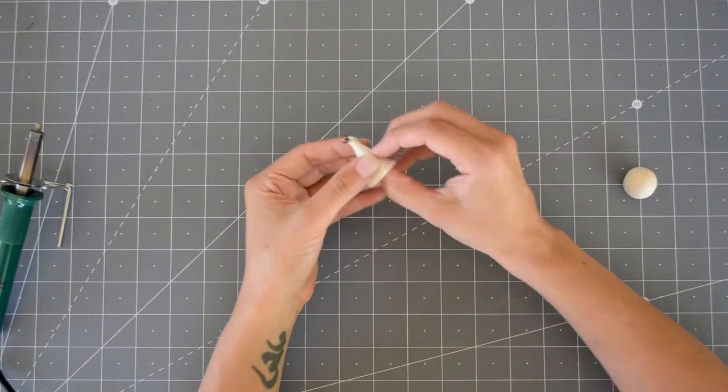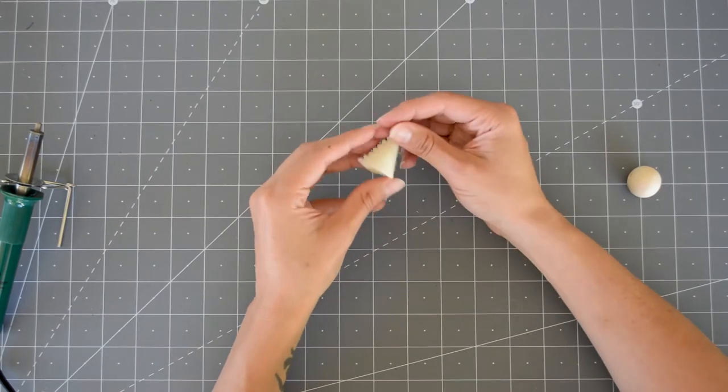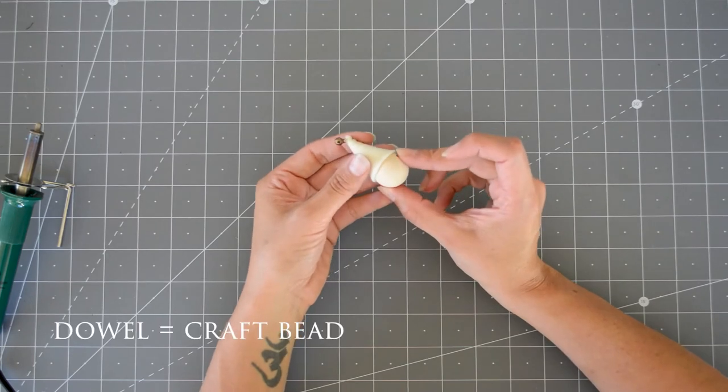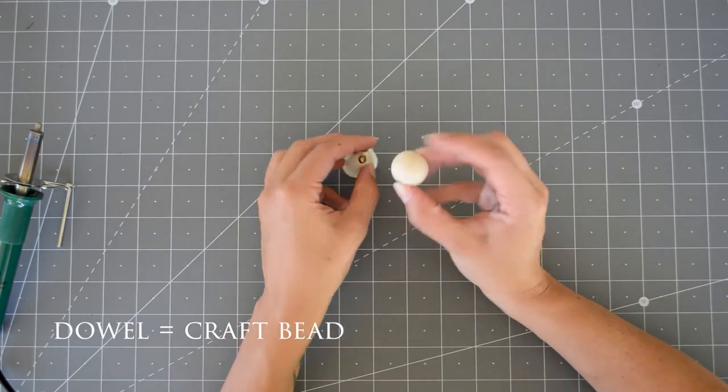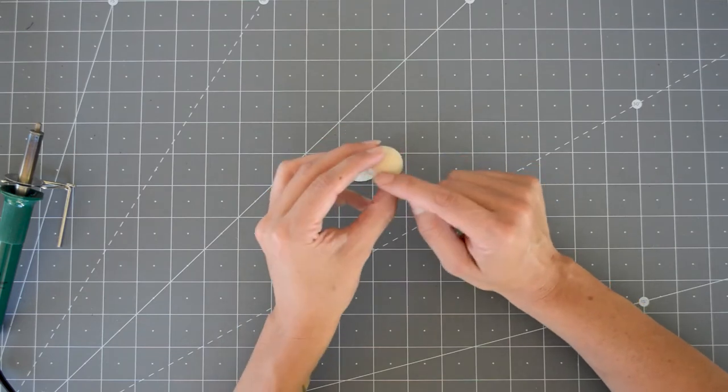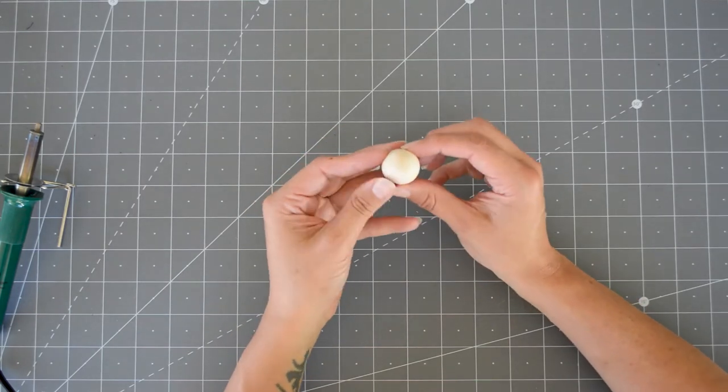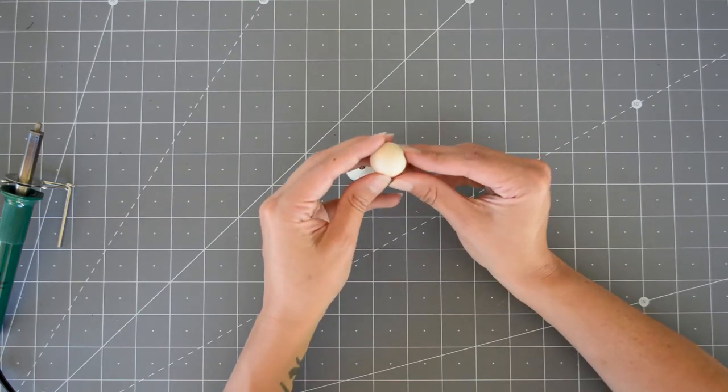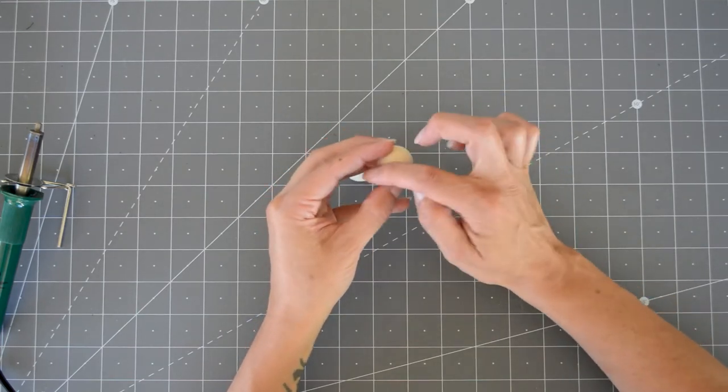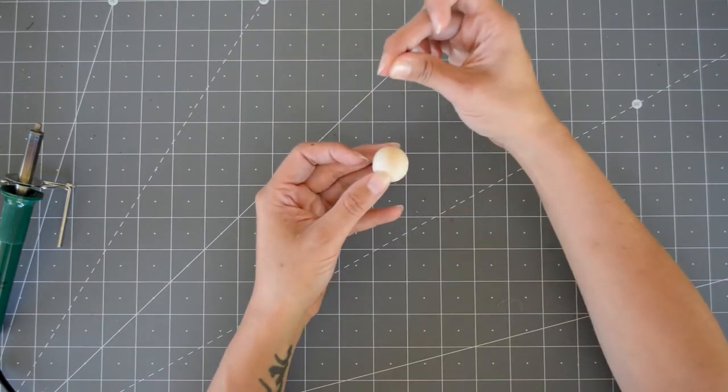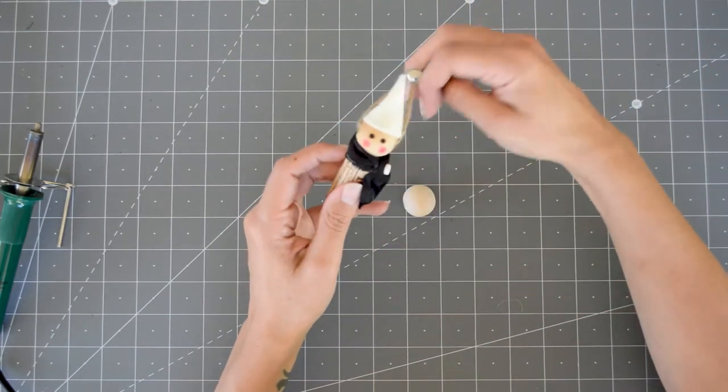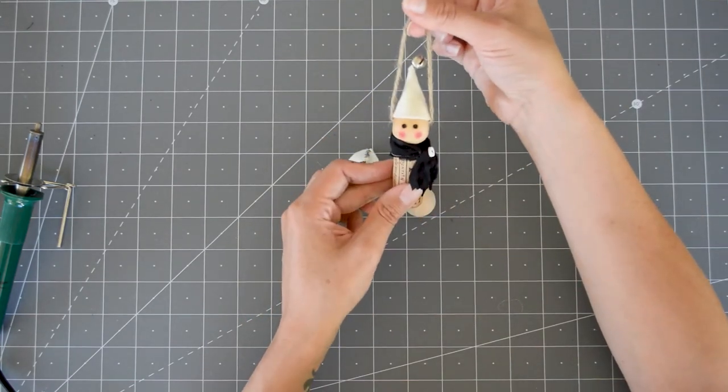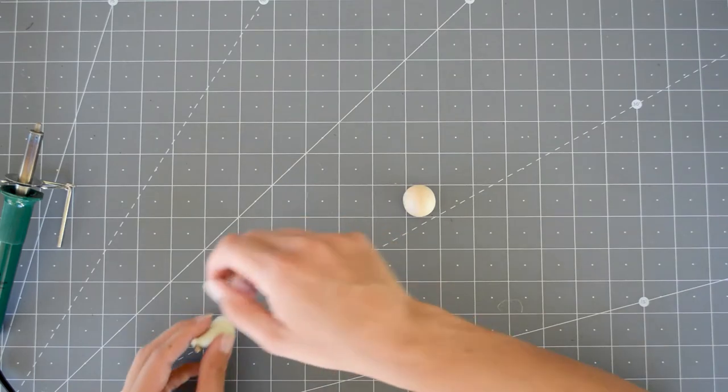Alright, now that the cap for the wine cork elf is done, we are going to attach it to the dowel. You're going to need a one inch dowel that has a hole that goes all the way through, because that's where we're going to put, in our case, we're going to use twine to insert through the dowel holes so we can attach it to the tree.